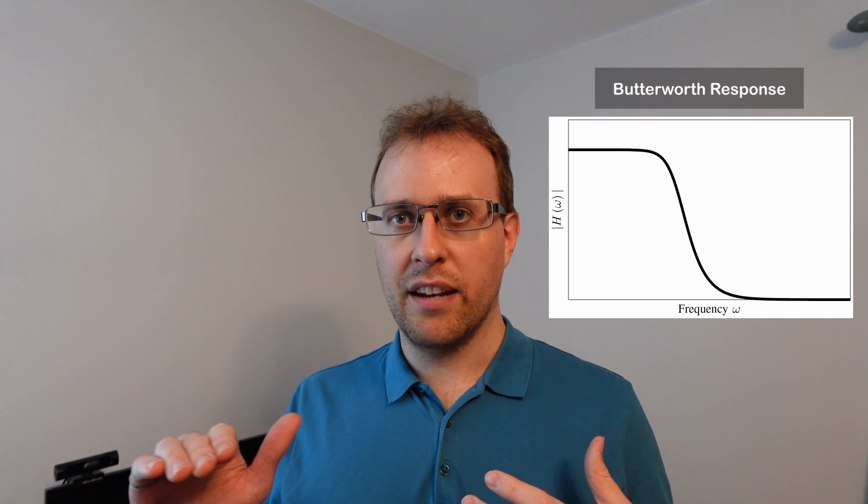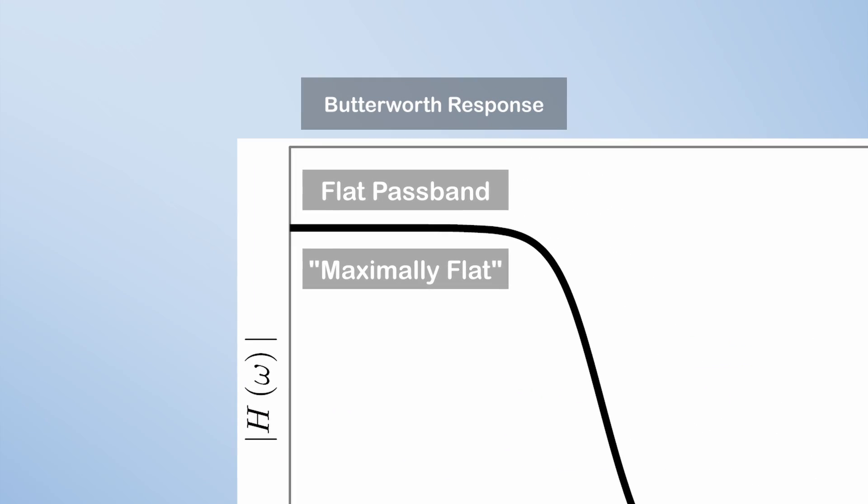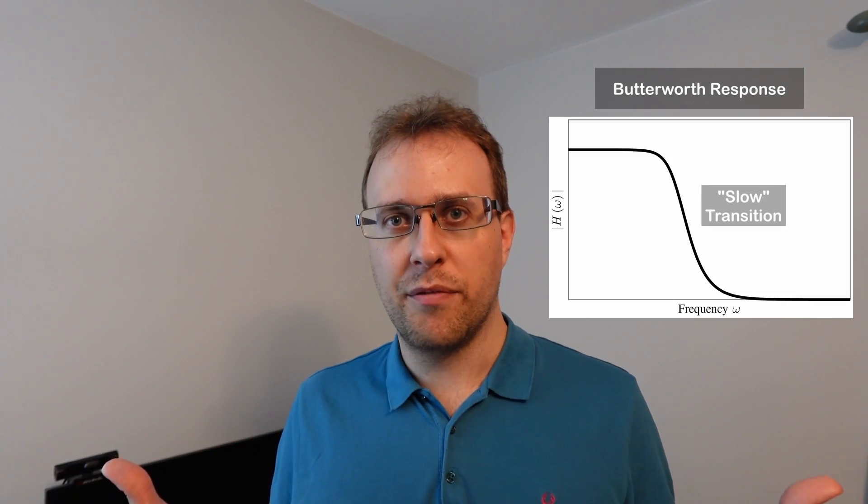A particular feature of the Butterworth filter is that it is maximally flat, meaning that in the pass band the magnitude of the frequency response has the fewest deviations in its behavior. The price for being maximally flat is that Butterworth filters tend to need larger transition bands than other types of filters.